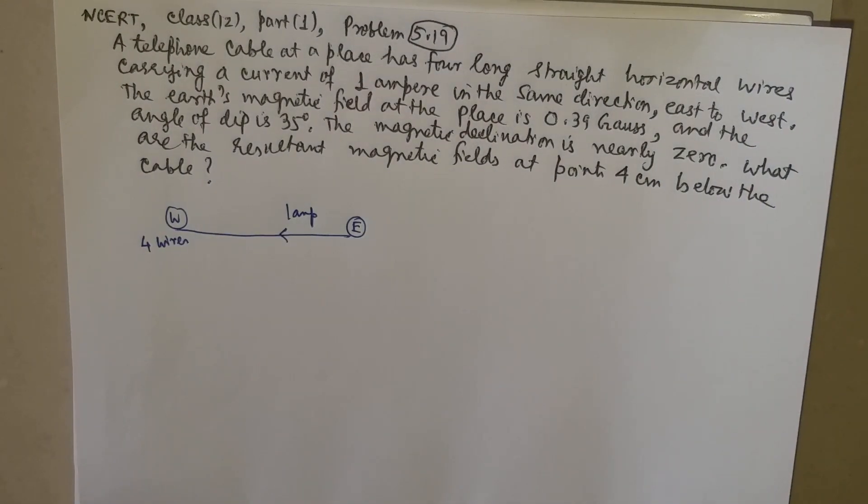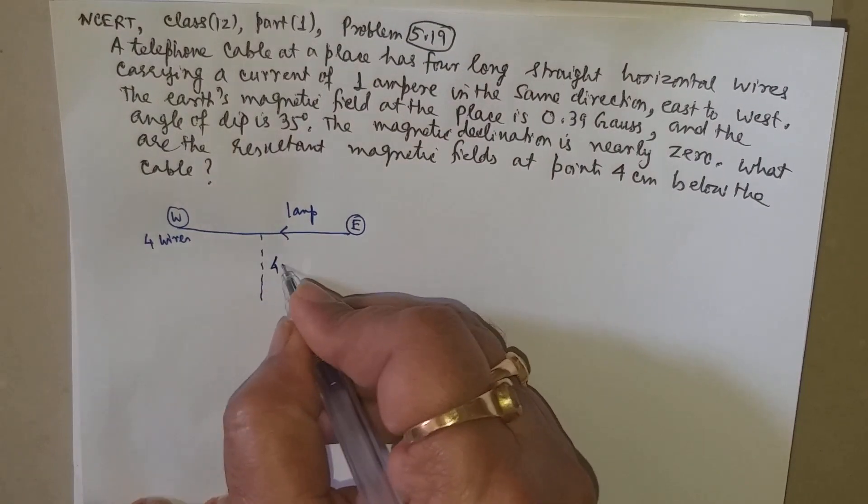The angle of dip they have given as 35 degrees. We have to find out the net magnetic field at 4 cm below the wire.